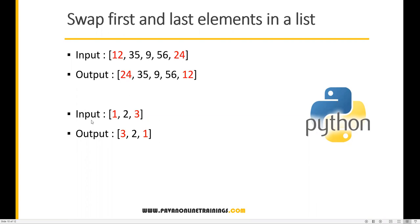Similarly, if I take an input like 1, 2, 3, one is the starting element, three is the last element, and after swapping these two elements the resulting list is 3, 2, 1. So how can we do this programmatically? Now let me go to PyCharm.